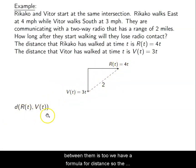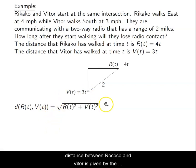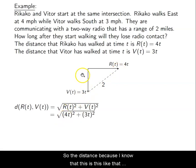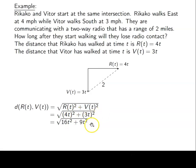We have a formula for distance. The distance between Rikako and Vitor is given by the square root of the sums of their squared functions. The distance, because I know that this is this length and that's this length, their length is given by their value at T. So 4t squared plus 3t squared gives me 16t² + 9t², which is 25t², which is 5t. I know 5t has to equal 2. So when I solve for time, that is 2/5. There we go.